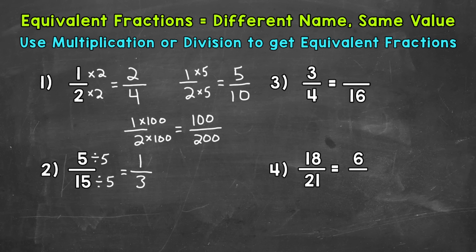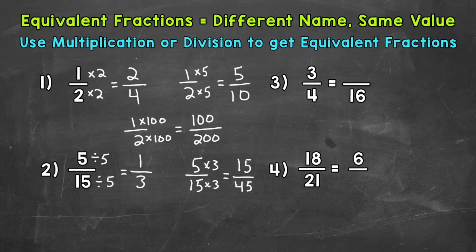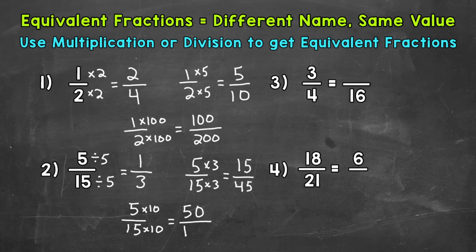Let's use multiplication as well to find two more equivalent fractions to 5 fifteenths. Rewriting our original fraction and multiplying both by 3: 5 times 3 gives us 15, and 15 times 3 gives us 45. So 15 forty-fifths is another equivalent fraction to 5 fifteenths. And lastly, let's multiply by 10: 5 times 10 is 50, and 15 times 10 is 150. So 50 one-hundred-fiftieths is another equivalent fraction to 5 fifteenths.